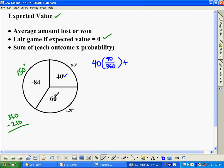And then what we do is we add on another outcome times its probability. Well, we can also get a 60. And the chance of that happening would be 120 degrees out of 360. And then finally, we can also land on a negative 84. So I'm going to write negative 84 here instead of plus. And that would be 150 degrees out of 360. And you can go ahead and use your calculator right now. I'm going to go ahead and actually reduce these fractions here.